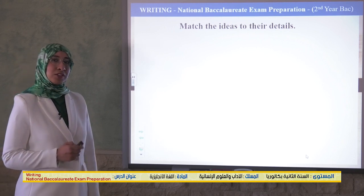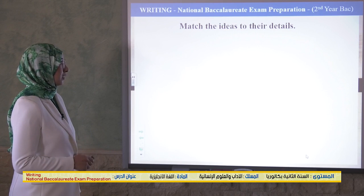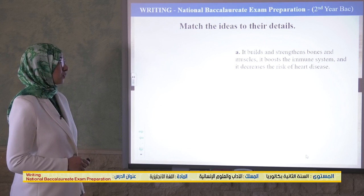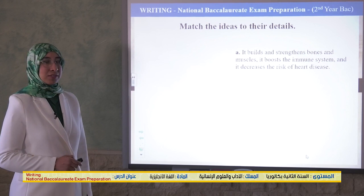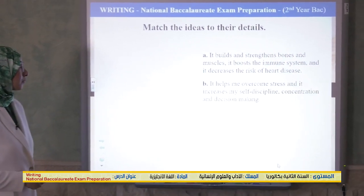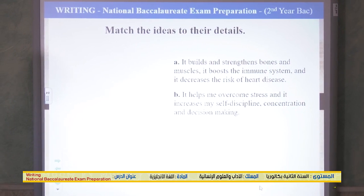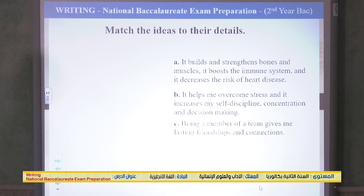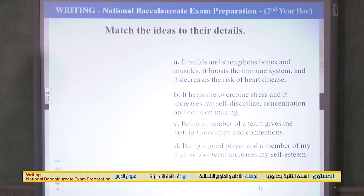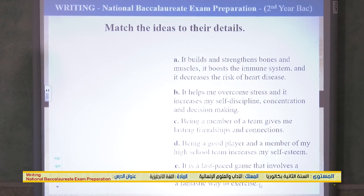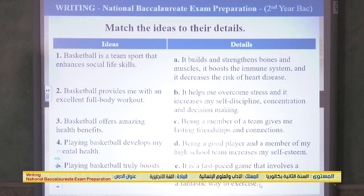Here are the details to match with ideas. Detail A: it builds and strengthens bones and muscles, it boosts the immune system, and it decreases the risk of heart disease. Detail B: it helps me overcome stress and it increases my self-discipline, concentration, and decision-making. Detail C: being a member of a team gives me lasting friendships and connections. Detail D: being a good player and member of my high school team increases my self-esteem. Detail E: it is a fast-paced game involving jumping and running, which is a fantastic way to exercise.